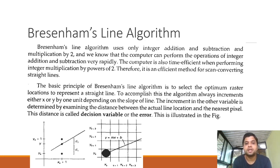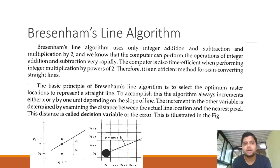Compared to DDA, this algorithm is more time-efficient. The computer is also fast when performing integer multiplication by powers of two. Here we only multiply by two, so there are no time delays from multiplication. Therefore, it is an efficient method for scan-converting straight lines.